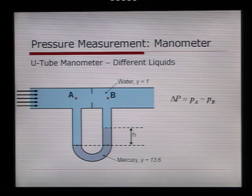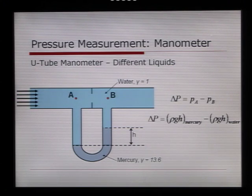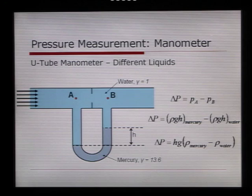We're looking to find what the pressure drop is between Pa and Pb, so we define that as delta P. Delta P is equal to rho G H of the mercury, minus rho G H of the water. And to simplify it, we get delta P is equal to H G times rho of the mercury, minus rho of the water.